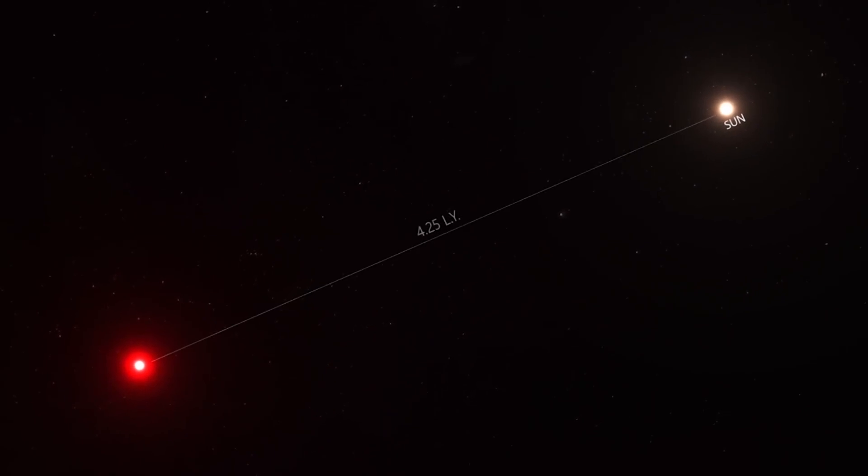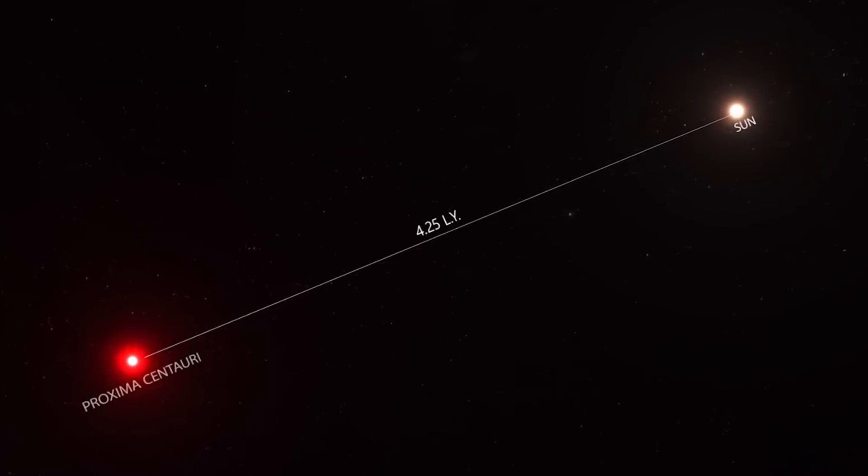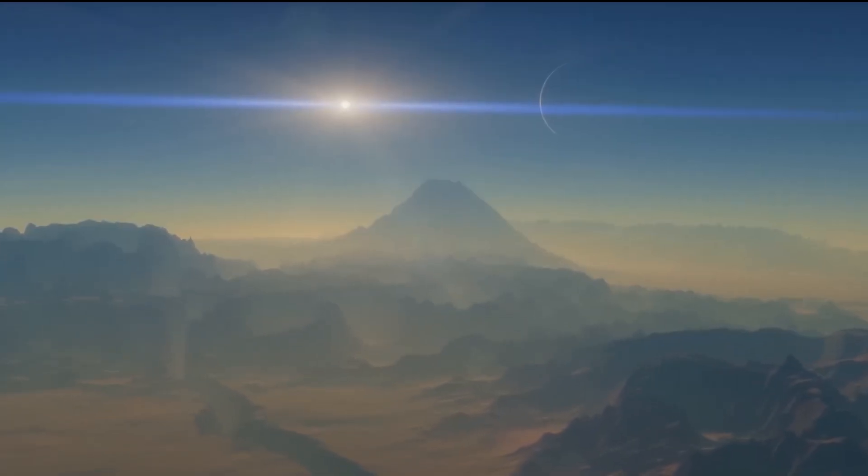This habitable zone is much closer to its parent star than the distance from the Earth to the Sun because Proxima Centauri is cooler than our Sun. Proxima b is about 4 light years away. Scientists found Proxima b to be the closest exoplanet that resembles Earth.